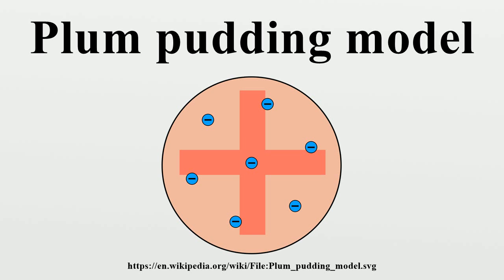Thomson's model was compared to a British dessert called plum pudding, hence the name. Thomson's paper was published in the March 1904 edition of the Philosophical Magazine, the leading British science journal of the day. In Thomson's view, the atoms of the elements consist of a number of negatively electrified corpuscles enclosed in a sphere of uniform positive electrification.